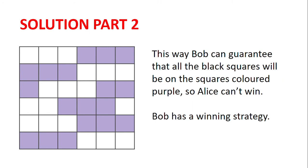So, this way, Bob can guarantee that all the black squares will be on squares coloured purple, because he will never write a larger number on a white square and he will always answer Alice's numbers on white squares with a larger number on a purple square. Looking at the placement of the purple squares, it is not possible to draw a line from the top of the grid to the bottom of the grid that stays in black squares, because all the black squares will be in the purple squares. So Alice can't win and Bob has a winning strategy.